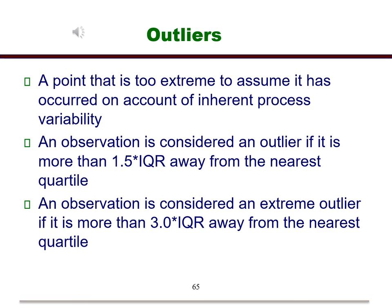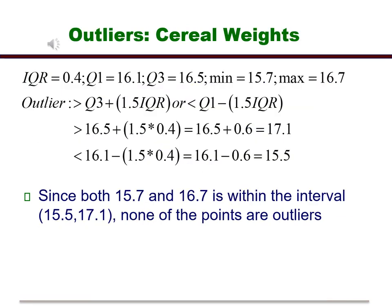Let's check this for the cereal weights. Here we have the calculations that we need to find the interval that we need to check for outliers. Since both 15.7 and 16.7 is within the interval 15.5 to 17.1, none of the points are outliers.